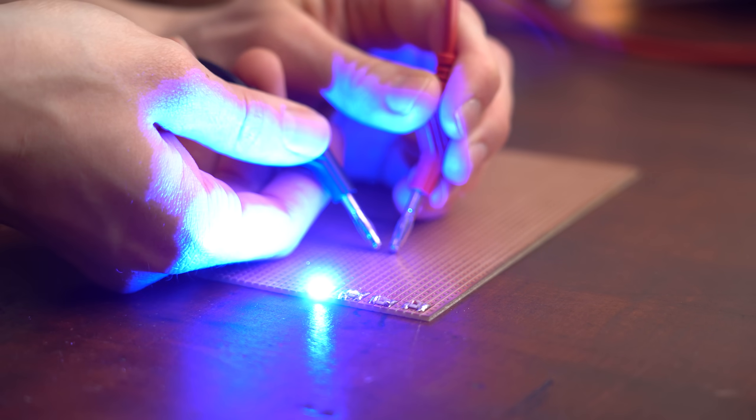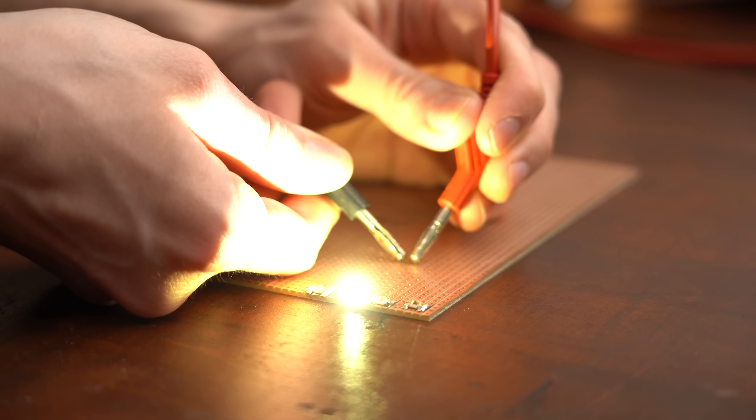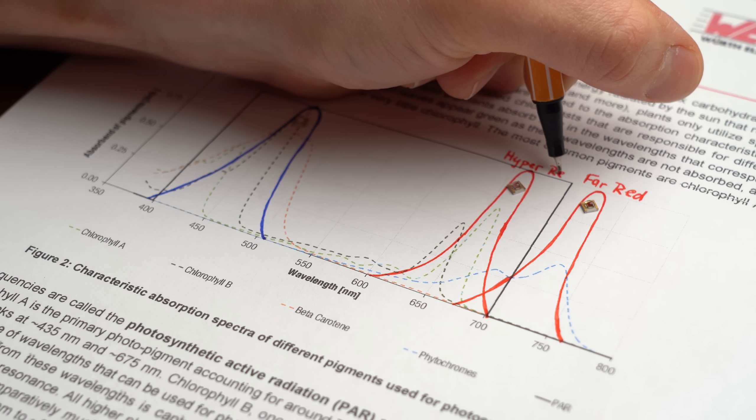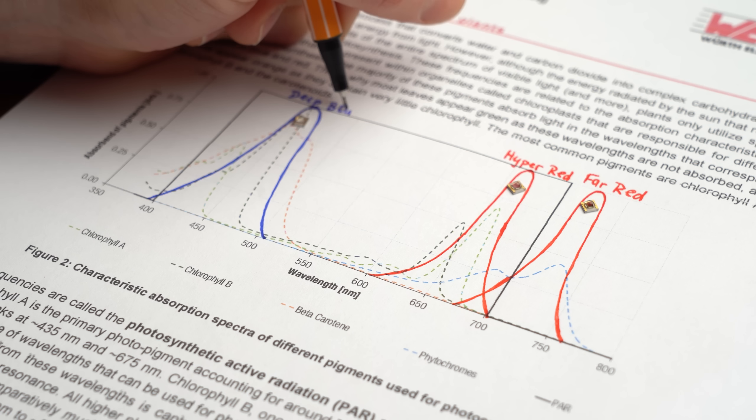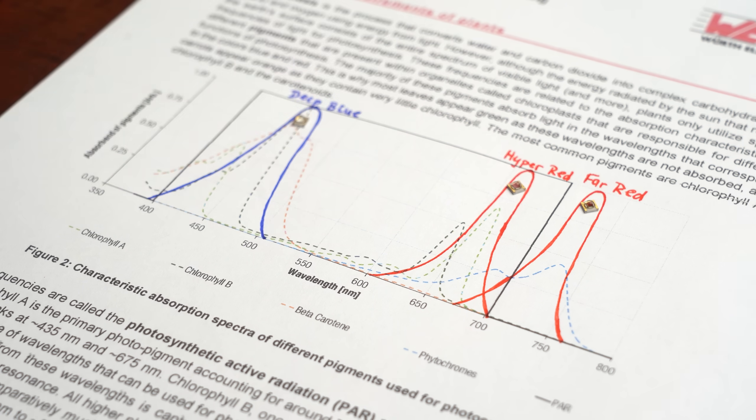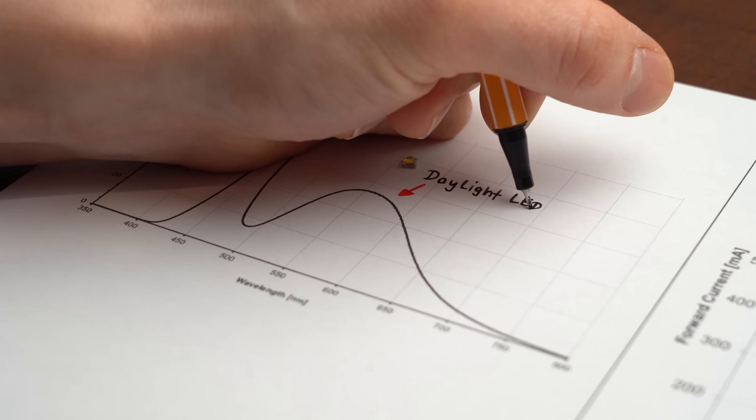Their colors are called Deep Blue, Hyper Red, Far Red and Daylight. And the first 3 LED colors are special because their emitted wavelength peaks correspond with the absorption maximum of the plant, which is basically the spot where they can absorb the most light. And needless to say the 4th daylight LED covers a bigger spectrum.